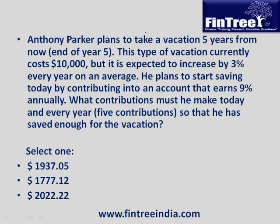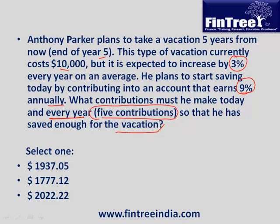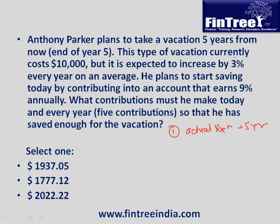Anthony Parker plans to take a vacation five years from now. The vacation currently costs $10,000 but is expected to increase by 3% every year. He plans to start saving today by contributing to an account that earns 9% annually, making five contributions. This is a two-step problem: first find the inflation-adjusted cost of the vacation in year 5 using 3% growth, then find the required annuity-due payment using 9% return.